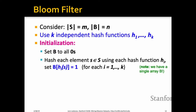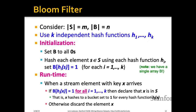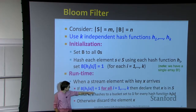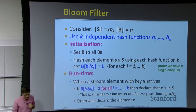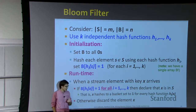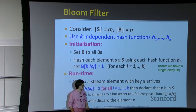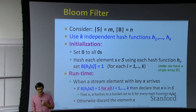Importantly, we use a single bit array — multiple hash functions but one array. At runtime, when a stream element x arrives, I output it only if for all k hash functions, x hashes to a bit with value one. Every one of the k hash values must point to a one-entry. If any hash function maps x to a zero-entry, I discard it.